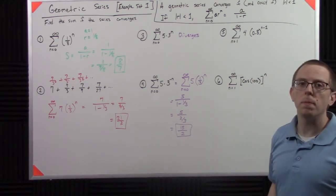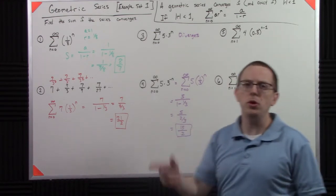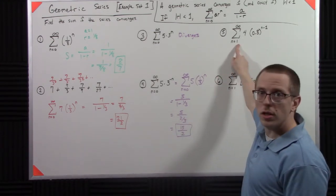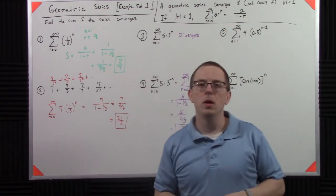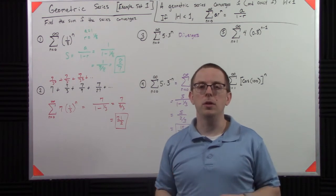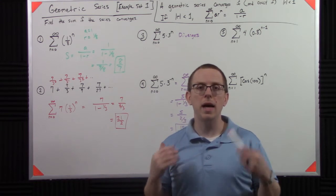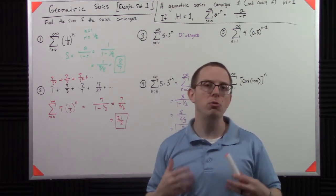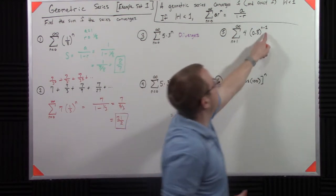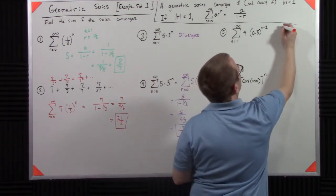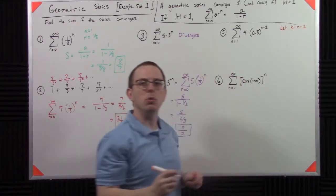Now over here is kind of a tricky one. I've got a, and I've got r, but I have two issues. My index doesn't start at 0, and my power is to the n minus 1, not to the n. So there's a couple ways to do this. I'm going to show you a way that's a little different than the way I did in the basic explanation. And it works just like what you think of as like a u substitution. Hear me out. I'm going to say, I need this to be n. So I'm going to say, let k equals n minus 1.